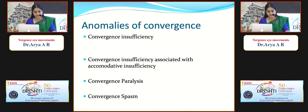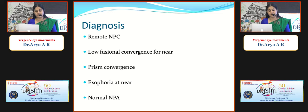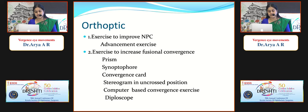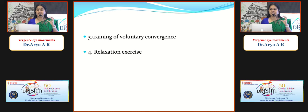Anomalies of convergence include convergence insufficiency — the most common finding in clinics — convergence paralysis, and convergence spasm. Convergence insufficiency can be primary, or due to refractive errors, presbyopia, or consecutive causes. Patients typically present with asthenopic symptoms. Treatment can be optical or orthoptic. Pencil push-up exercises are easy to perform at home — the child holds a target at maximum near single-vision distance and the parent is asked to monitor the exercise carefully to ensure compliance.